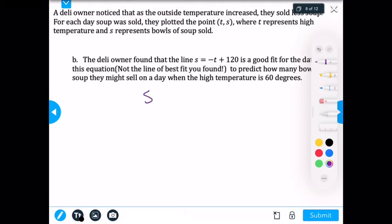So let's start off by copying down our equation again. And remember, we have this information up here that we read first. We have the points T comma S on our scatter plot, and T represents high temperature, and S represents bowls of soup sold.